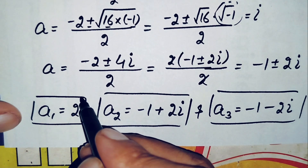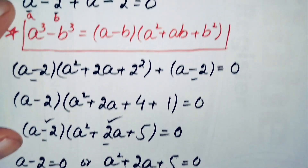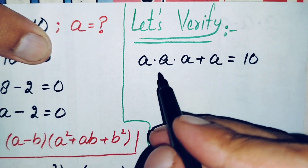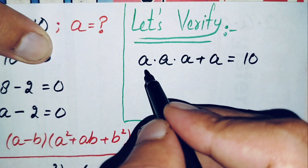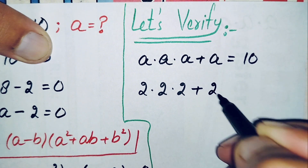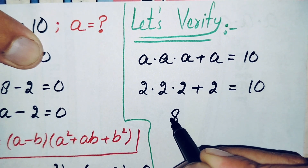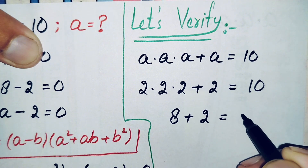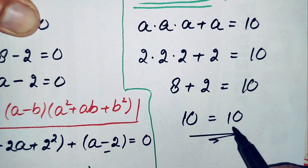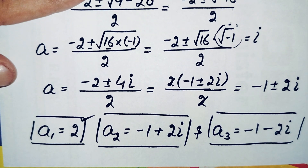Now here we will try to verify whether the first solution a1 is equal to 2 is the exact and correct solution of this algebra math problem. So we will verify it. To verify, we rewrite the original problem and replace a with its value 2. So this will become 2 times 2 times 2 plus 2 is equal to 10. Now 2 times 2 is 4, and 4 times 2 is 8. So this becomes 8 plus 2 is equal to 10, which is equal to 10. Since both sides are equal, a1 is equal to 2 is the exact and correct value of a.